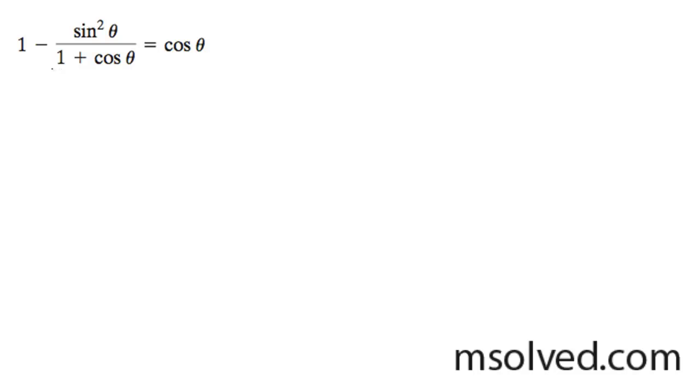But first what we can do is take the conjugate, and we're going to get 1 minus sine squared theta over 1 plus cosine theta times 1 minus cosine theta over 1 minus cosine theta.